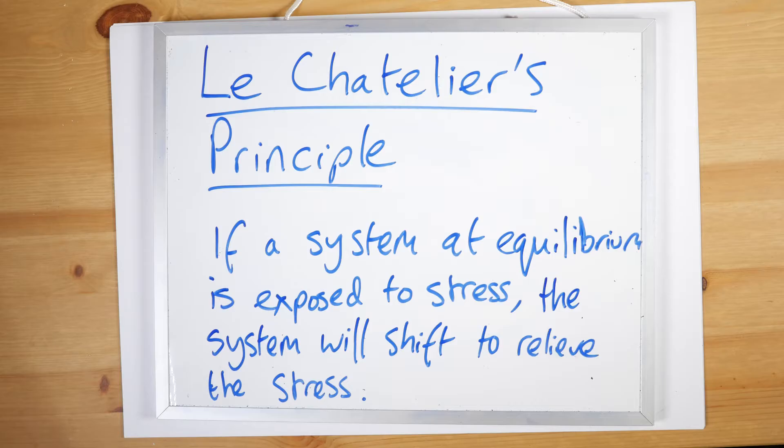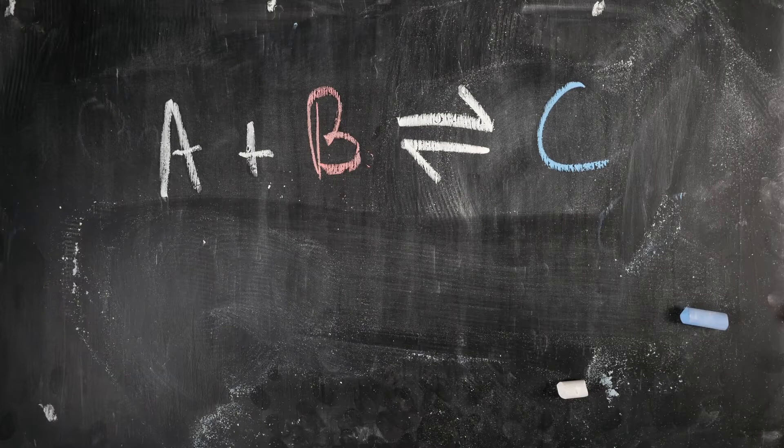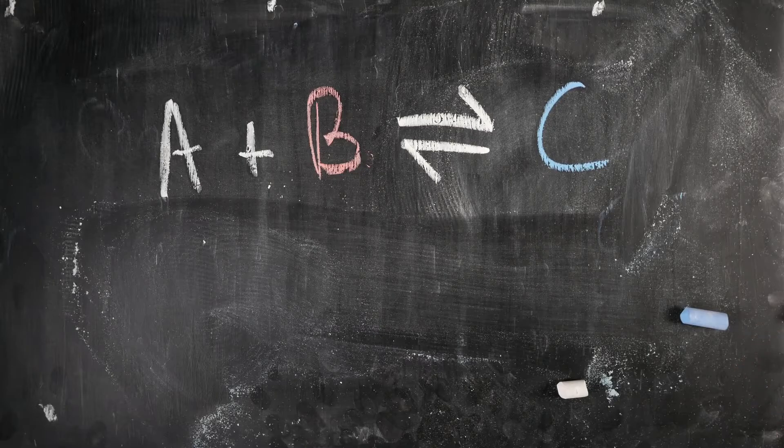Le Chatelier's Principle states that if a system at equilibrium is exposed to stress, the system will shift to relieve that stress. Now stress has come in three flavors: there's temperature, pressure, and concentration. So let's look at these one by one.